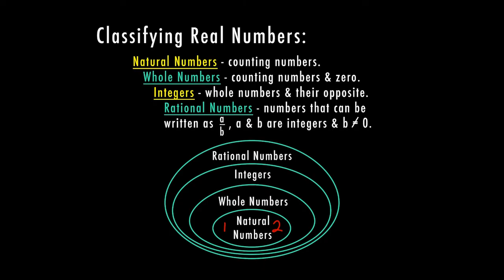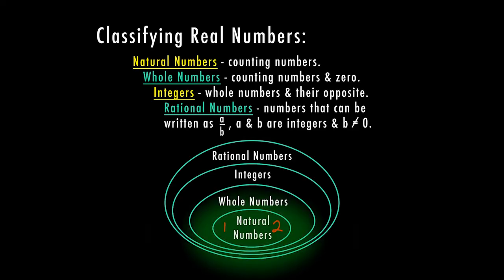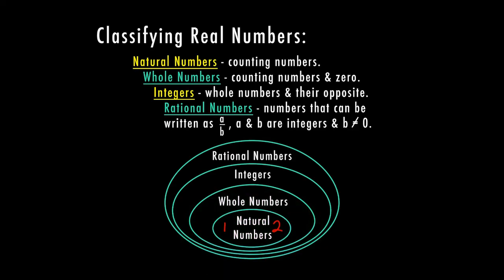Our whole numbers are going to include our counting numbers or natural numbers, and the number zero. So zero is included as a whole number, but it is not a natural number.